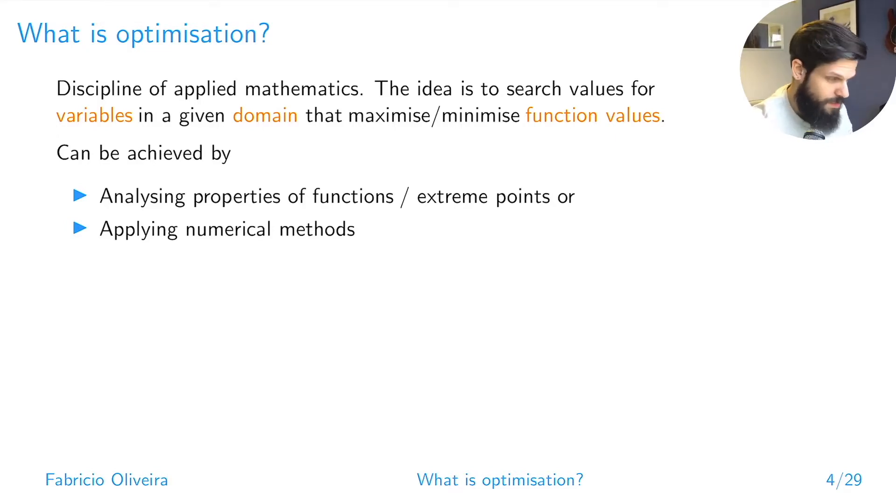Whenever we talk about optimization in our context, we're talking about this discipline that is part of applied mathematics. Basically, the idea is that you're trying to find values for variables in a given function, in a way that you're trying to find maximum or minimum values for these functions. You're trying to find a maximum point or a minimum point for the function, and there are basically two ways you can achieve that. One way is analyzing the properties that your function might have, because by analyzing these properties you might be able to infer what you're looking for or what needs to be satisfied in terms of finding an extreme point, which are these points that will have maximum values or minimum values.